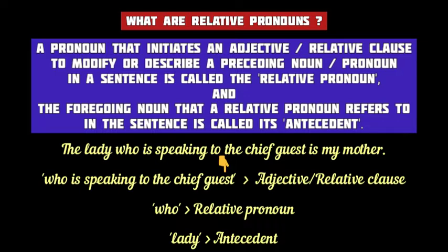Study this sentence: 'The lady who is speaking to the chief guest is my mother.' Here, the subordinate clause 'who is speaking to the chief guest' is the adjective or relative clause, initiated by the relative pronoun 'who.' The noun 'lady,' placed just before 'who,' is called its antecedent. The relative clause modifies the antecedent 'lady.' A relative pronoun always comes right after its antecedent in a sentence.